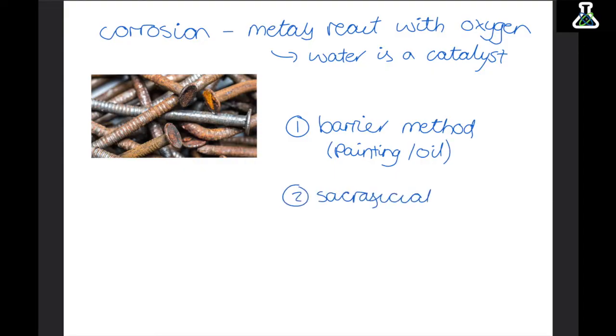The second method is the sacrificial method. And this is when we cover the metal we want to save with a more reactive metal. So the oxygen reacts with the more reactive metal on the outside instead of the metal we are covering it with. Even if some of the covering has scratched off, the oxygen will still only react with the really reactive metal.